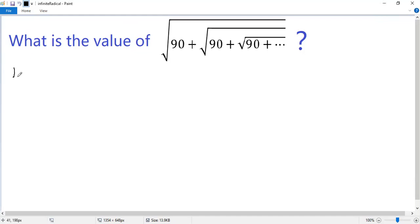Let x equals square root of 90 plus square root of 90 plus. This process continues infinitely. So let's use dot, dot, dot to stand for it.